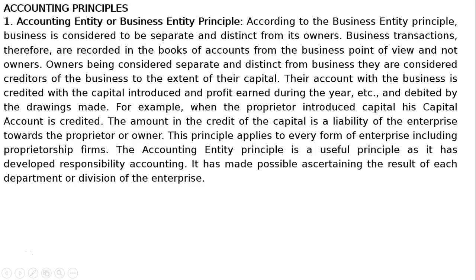The first principle is the Accounting Entity or Business Entity Principle. According to this principle, a business is considered to be separate and distinct from its owners. Business transactions are therefore recorded in the books of accounts from the business point of view and not the owner's. Owners are considered creditors of the business to the extent of their capital, with their account credited for capital introduced and profit earned, and debited by drawings made.